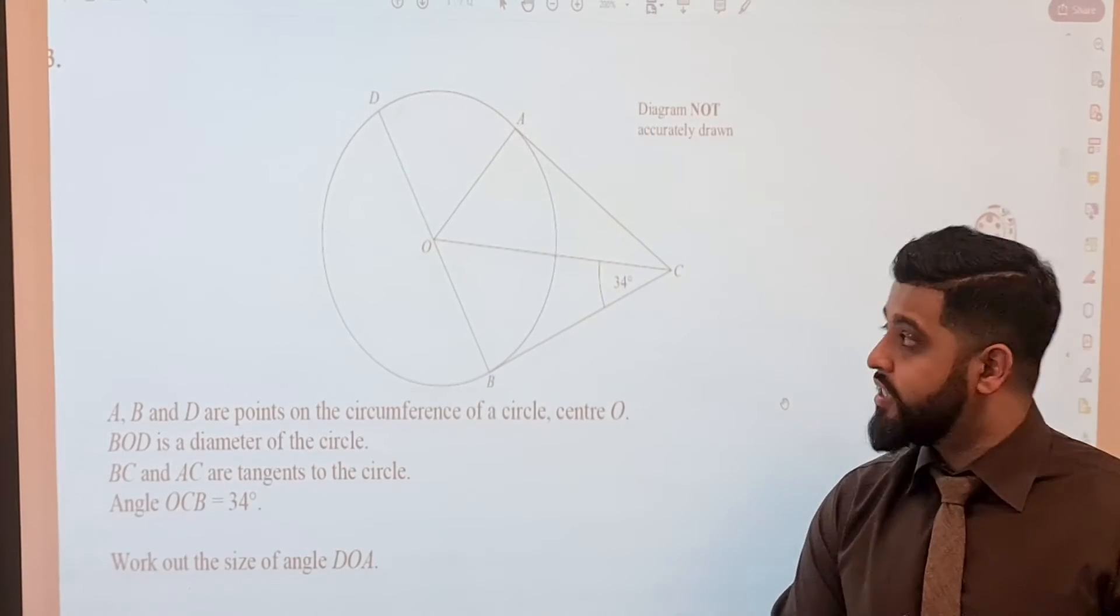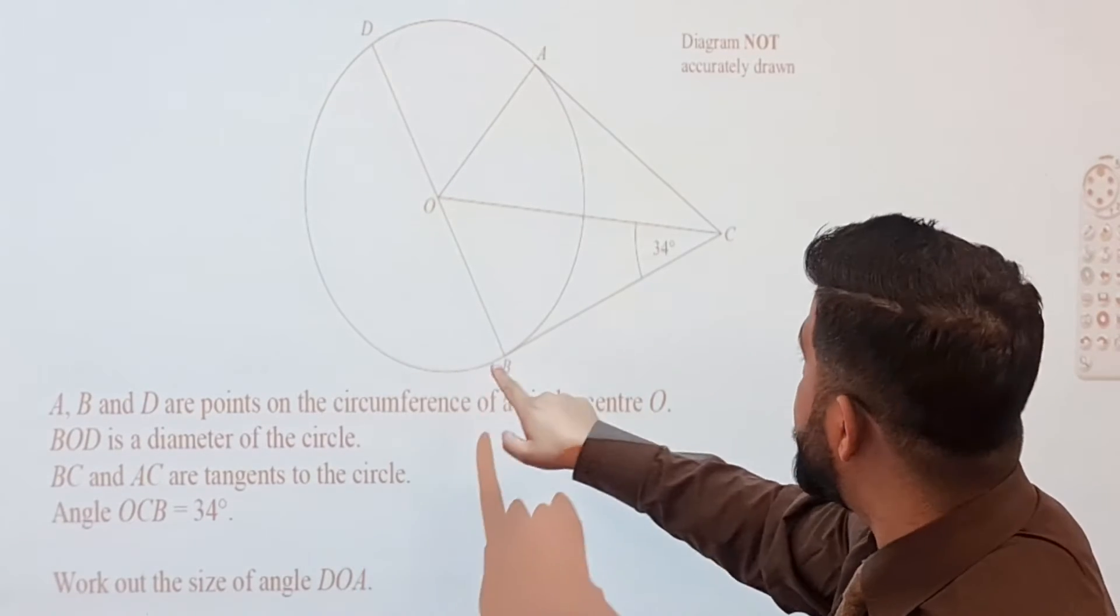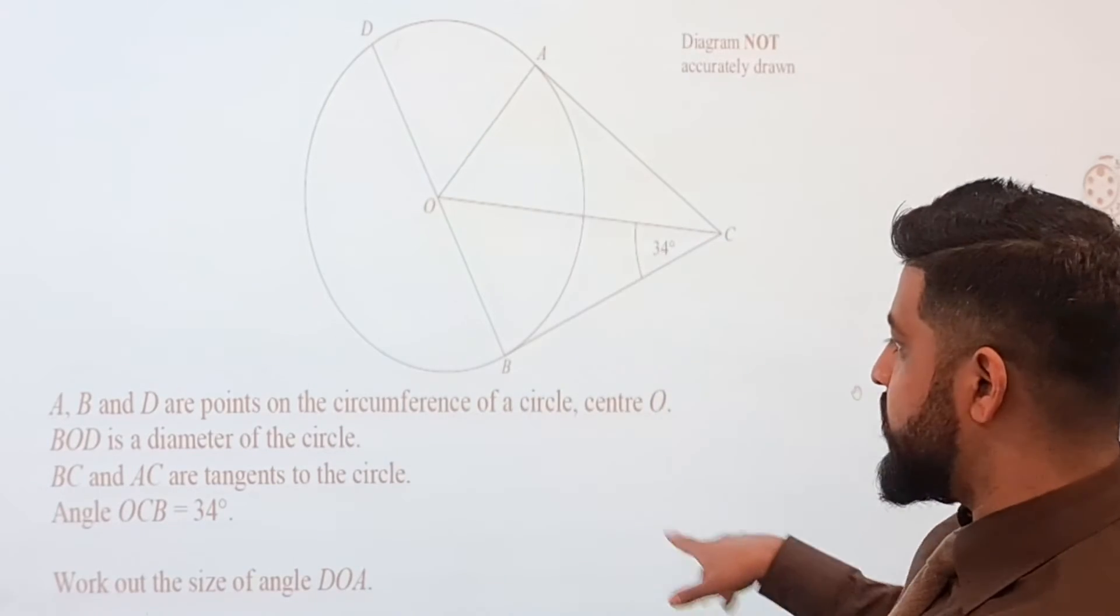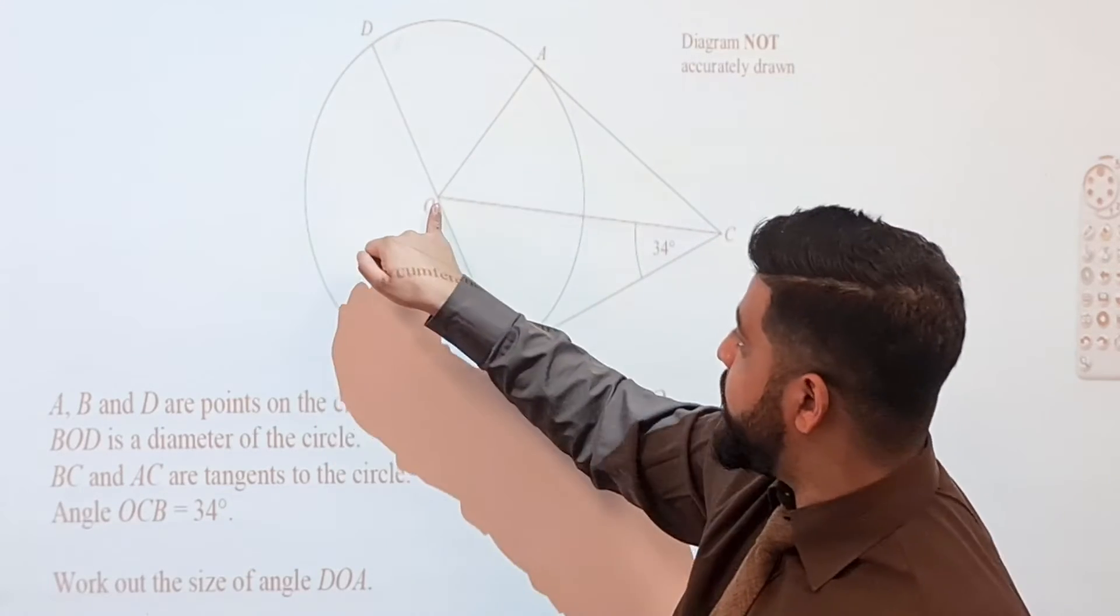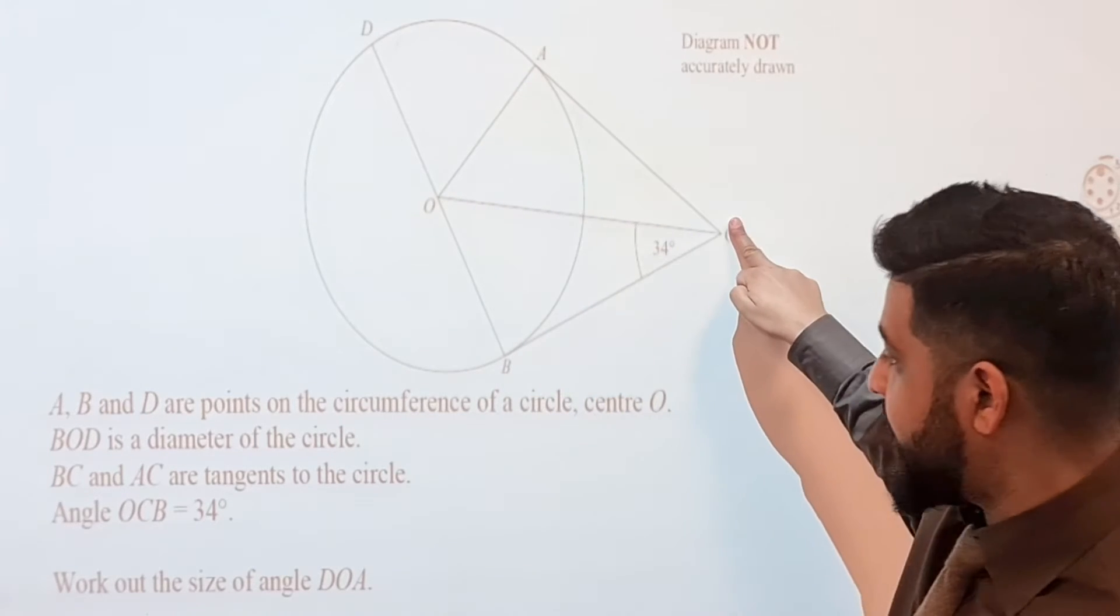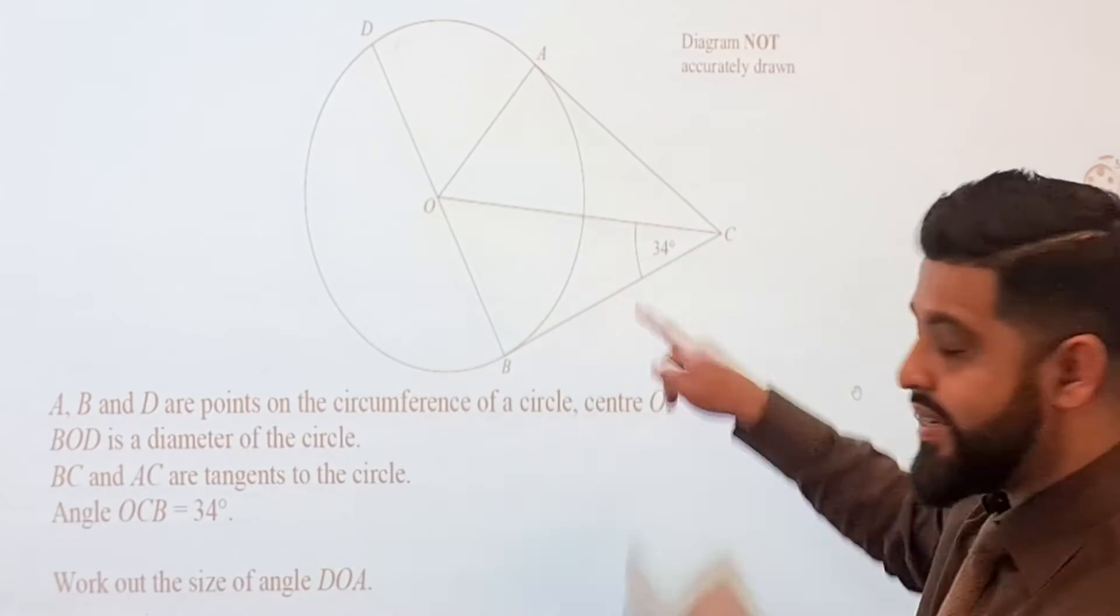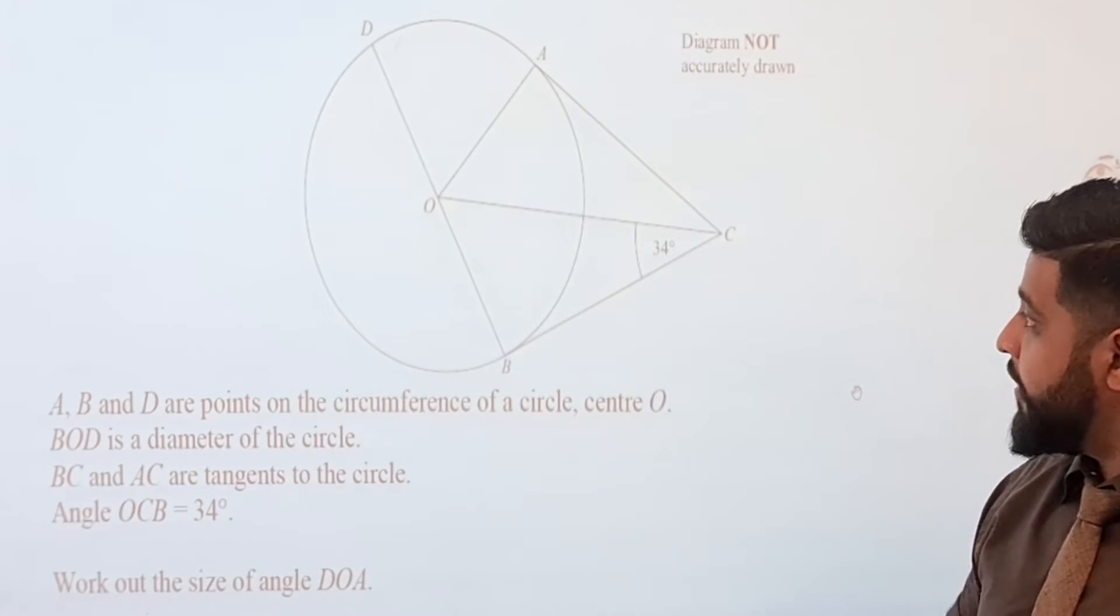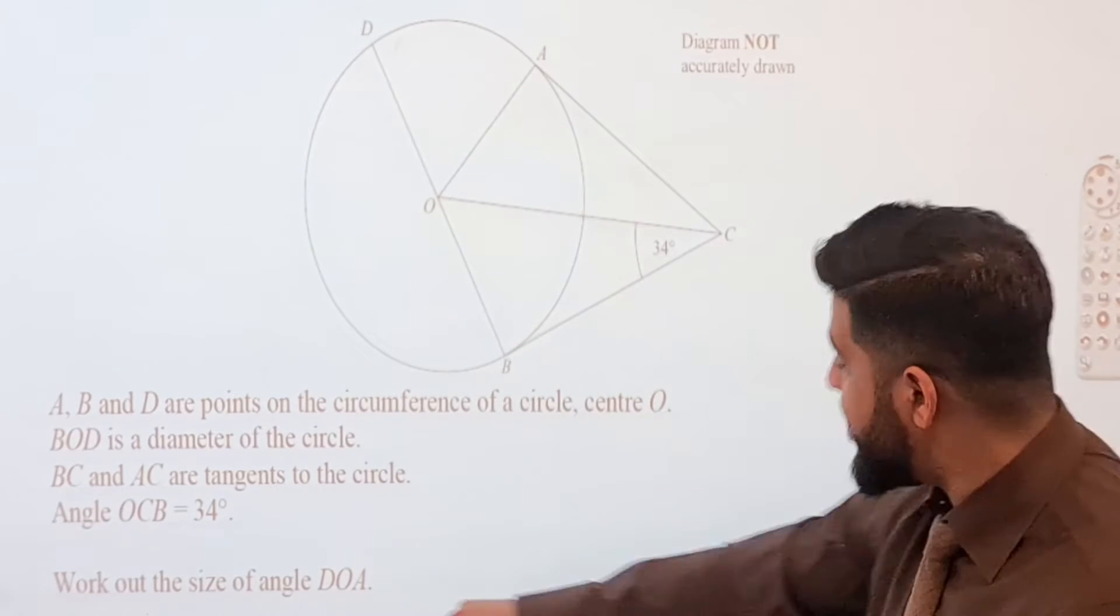Right, on to our third example. Here we have another circle and we are told that A, B, and D are points on the circumference of the circle, center O. BOD is a diameter, so therefore this is the center of the circle. And we are told that BC and AC are tangents to the circle. And we are given this angle here, which is angle OCB as 34 degrees. The question says find angle DOA.